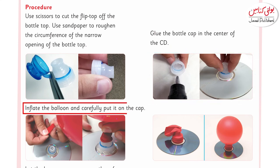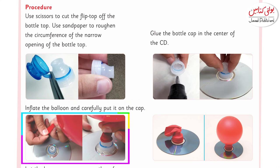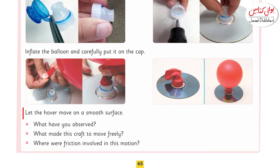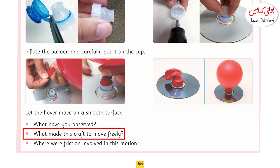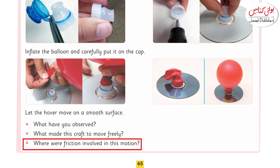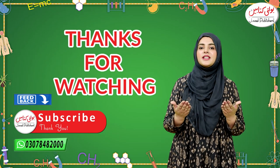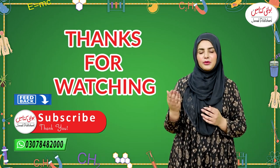Inflate the balloon and carefully put it on the cap — jaise ke aap diagram mein dekh rahe hain, aap ne balloon ko phoolana hai aur ise bottle cap ke upar is tarah adjust karna hai ke iska hawa wahan se leak na ho. Then let the hovercraft move on a smooth surface and observe what changes occur. Questions to answer: what did you observe? What made this craft move freely? Where was friction involved in this motion? Ye sab sawalat ke jawabat aapko experiment karne ke baad mil jayenge. Keep watching, apna bahut sara khayal rakhiye, jude rahiye Bolti Kitabon ke saath.